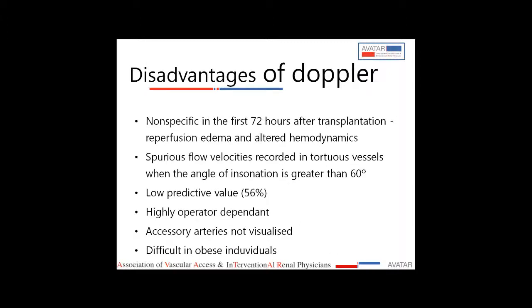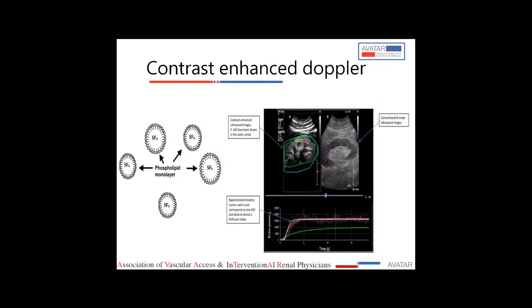Always use the combination of extra-renal and intra-renal criteria to diagnose TRAS. There are several disadvantages to Doppler: within the first 72 hours after transplant you have falsely high peak systolic velocities, so you cannot diagnose TRAS in that window; spurious flow velocities occur if vessels are tortuous or with a poor angle of insonation; it has low predictive value, is highly operator-dependent; accessory artery stenosis is not visualized; and it is difficult in obese individuals.